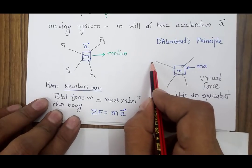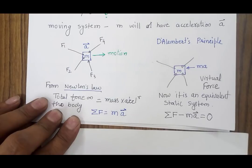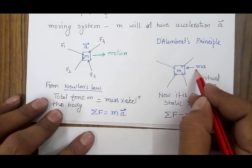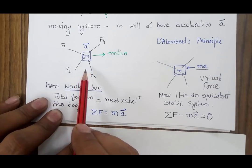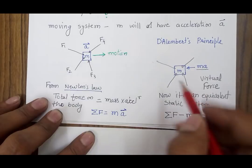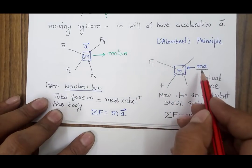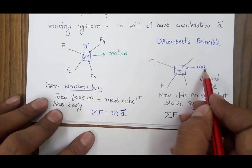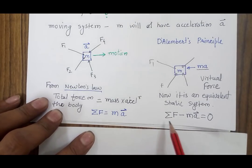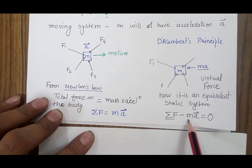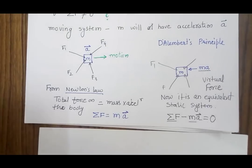Based on this philosophy, D'Alembert's principle says: you have four forces and because of the four forces the system is moving, so let's make the system static by adding a virtual force of magnitude M times a. We add an additional force of magnitude Ma, and because of this Ma the system will be considered as an equivalent static system. Writing the equation for this equivalent static system, the total forces minus mass into acceleration will become zero.